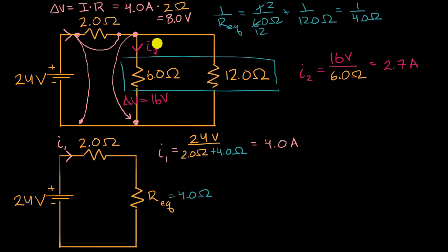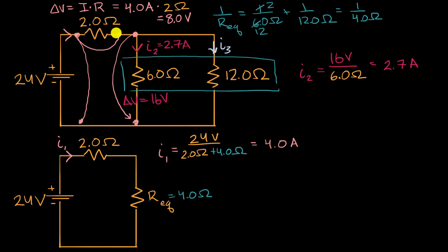Rounding to two significant digits, I sub two is 2.7 amps — that's what we wanted to find. For fun, try to figure out I sub three using the same technique. The four ampere current through the first resistor gets split between I two and I three, so they must add up to four amps. Doing the same analysis gives 1.3 amps for I three, since 2.7 plus 1.3 equals four amps.